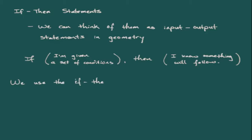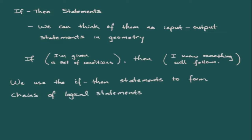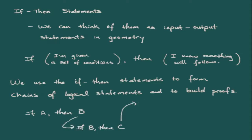How we use if-then statements in geometry is that the input-output structure is used to form chains of logical statements, and those chains are then used to build proofs.